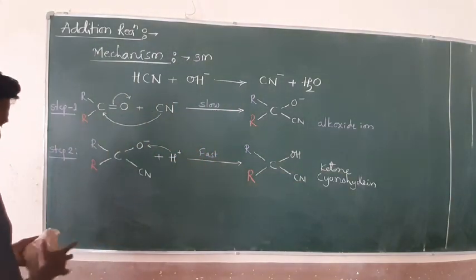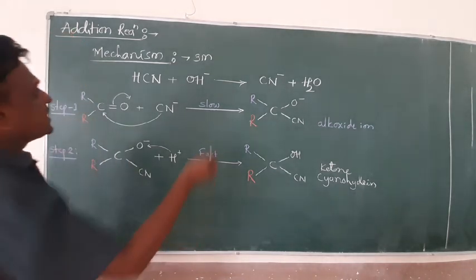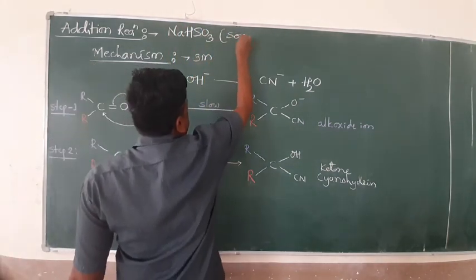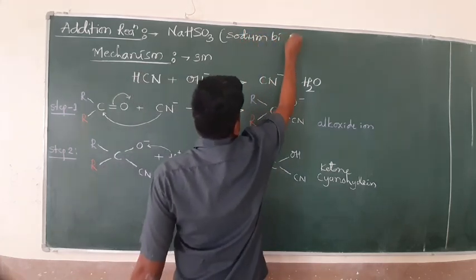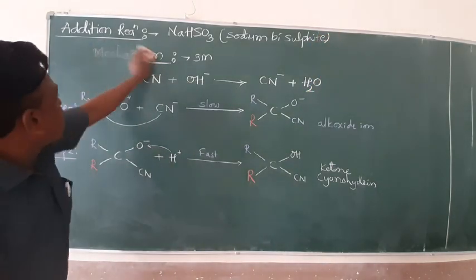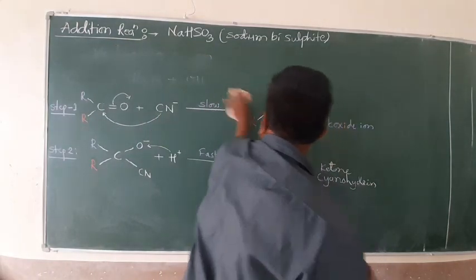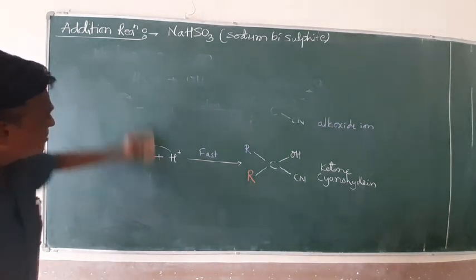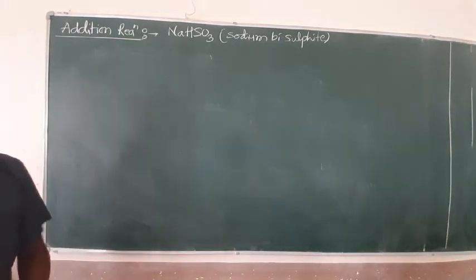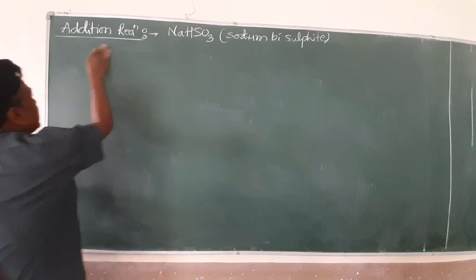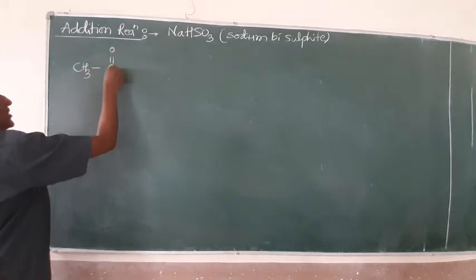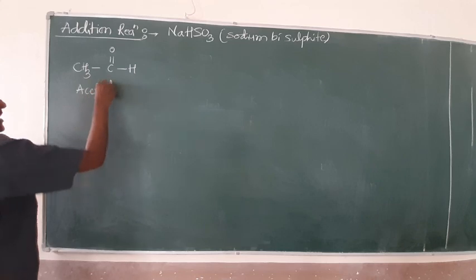Next, after this mechanism, we want the addition reaction with the next compound. The next compound is NaHSO₃ — sodium bisulfite. Keep this in your mind. Now, let me give you an example from the syllabus: CH₃CHO, which is acetaldehyde. What happens when acetaldehyde reacts with NaHSO₃?